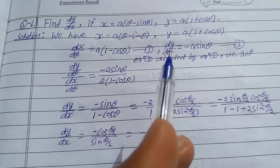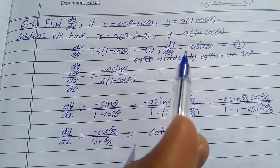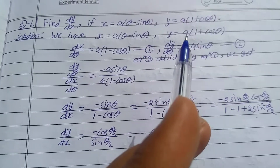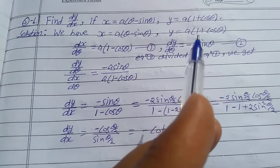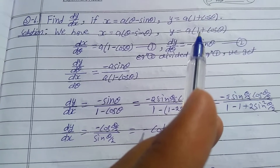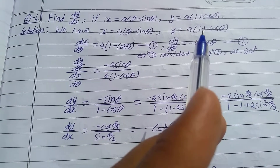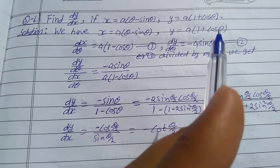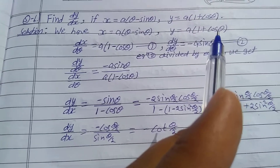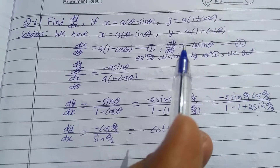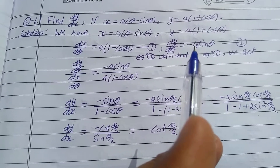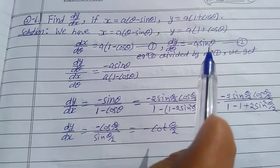dy/dθ = a times (0 - sinθ), since the derivative of 1 is 0 and derivative of cosθ is -sinθ. So dy/dθ = -a sinθ. This is equation second.